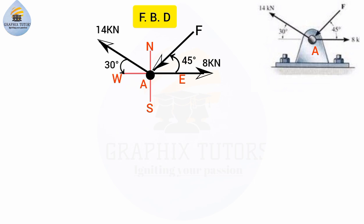One thing you need to understand about the free body diagram is that to calculate the resultant force, we need to resolve any inclined force seen in the question. The two inclined forces we have are force F and the 14 kilonewtons. The force F is acting between the North and East, as you can see, so I'm going to bring out the North and East components.